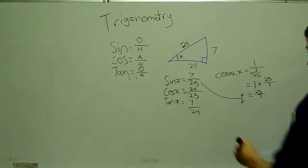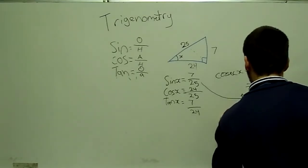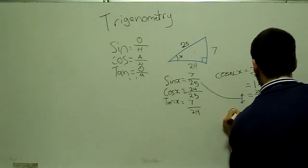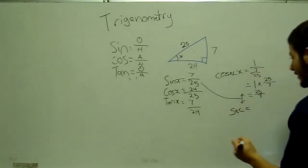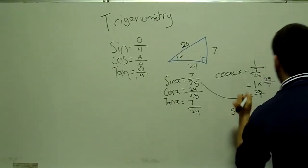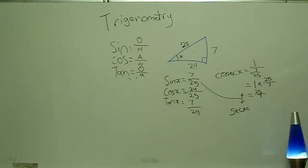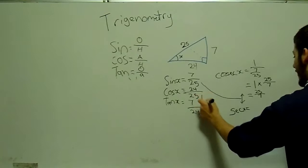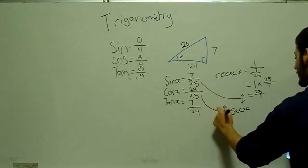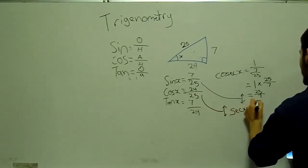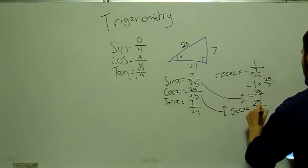Now cos is pretty simple enough. The reciprocal of cos is represented by sec, don't ask me why, but someone decided that it's sec, which is just the reciprocal of 24 over 25, so we just flip that round again. 25 over 24.